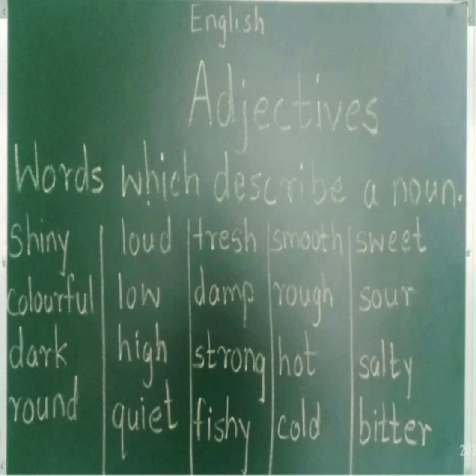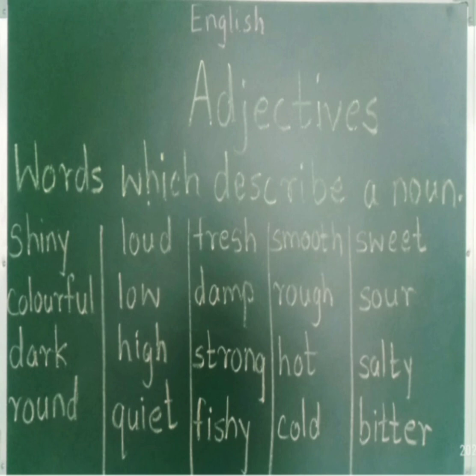The next comes tongue. Now, we can taste many things and we come to know that everything has its own taste. So, the names for the taste are sweet, sore, salty, bitter.